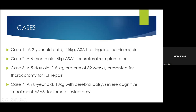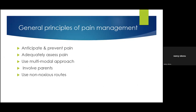We are going to look at a few cases at the end. Case one: a two-year-old child with inguinal hernia repair. Case two: a six-month-old weighing six kilos coming in for ureteral re-implantation. Case three: a five-day-old preterm baby of 32 weeks presenting for thoracotomy for tracheoesophageal fistula repair. Case four: an eight-year-old, 18 kg child with cerebral palsy and severe cognitive impairment, ASA class three, coming in for femoral osteotomy. We'll look at these cases and see how we manage them differently at the end of the presentation.